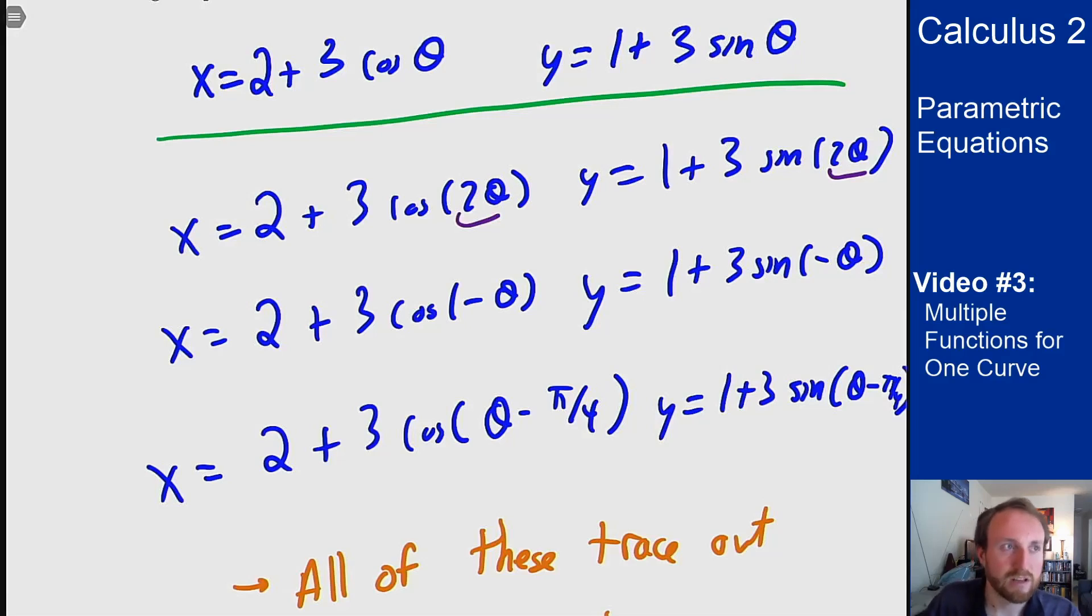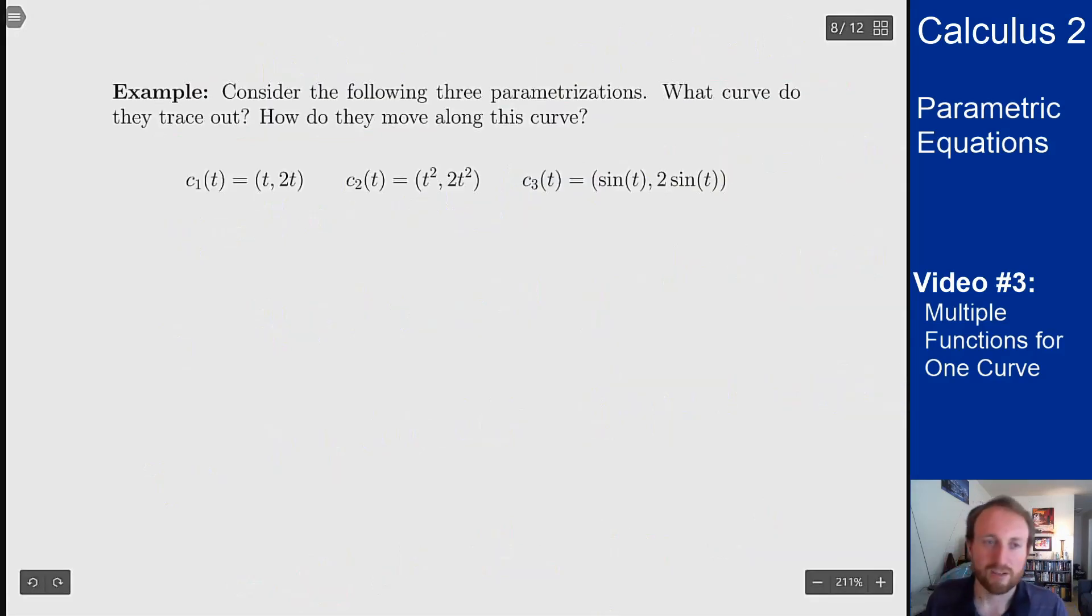So the path matters, not just the curve itself. If you want to talk about certain values, you need specific properties in mind. Let's look at another example. We have three parameterizations and want to know what they trace out and how they move along the curve.